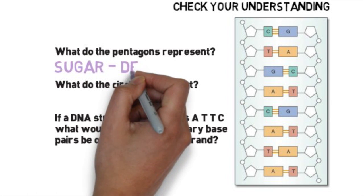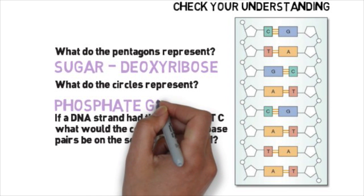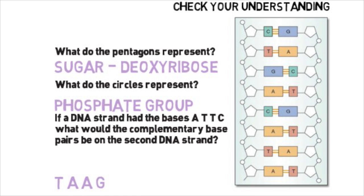The pentagons represent the sugars, in this case deoxyribose. The circles represent the phosphate group. And the second DNA strand would be T, A, A, G.